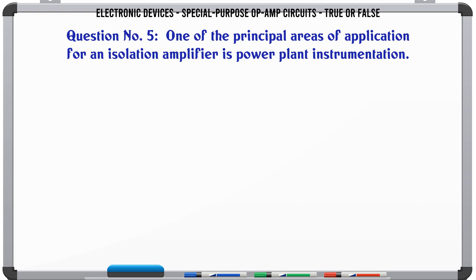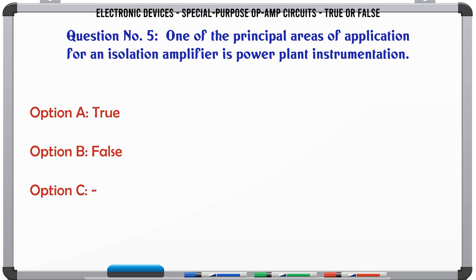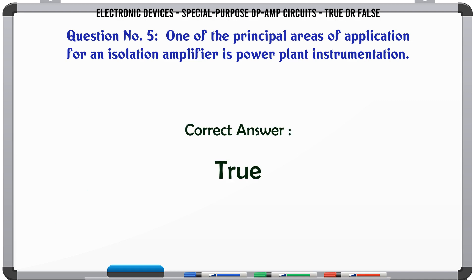One of the principal areas of application for an isolation amplifier is power plant instrumentation. A. True. B. False. C. D. The correct answer is True.